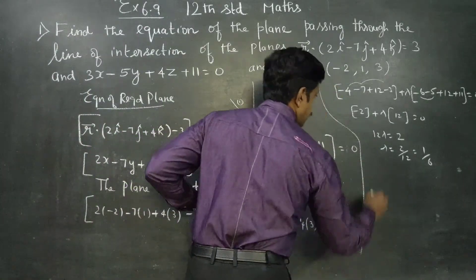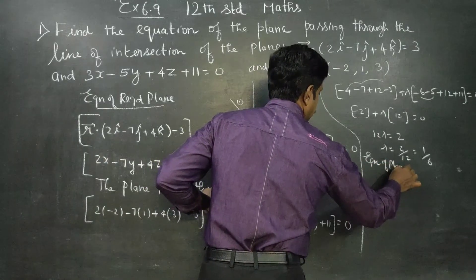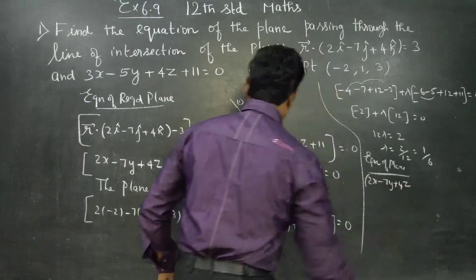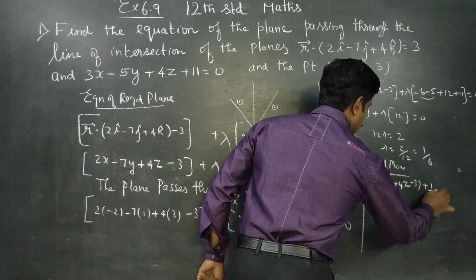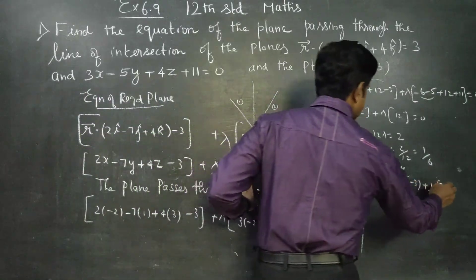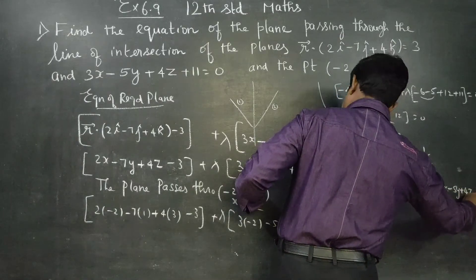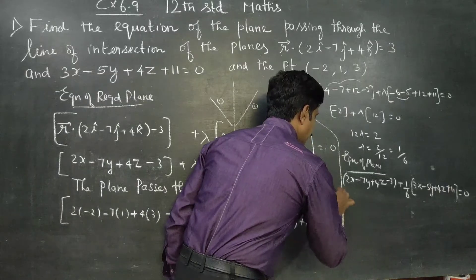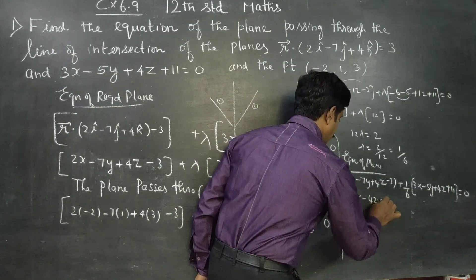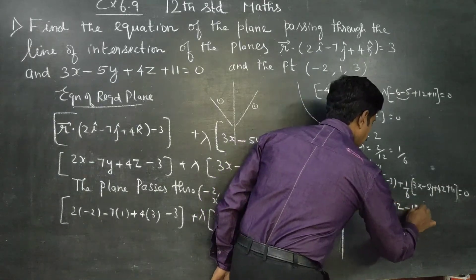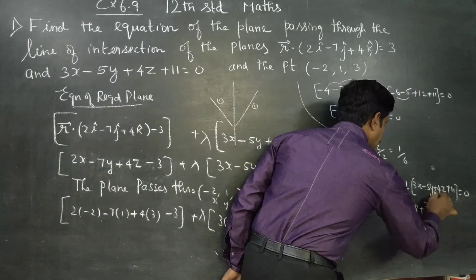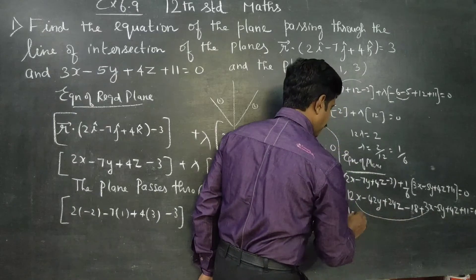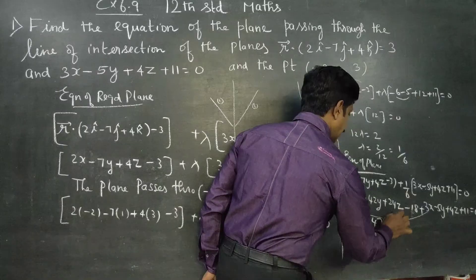Therefore, equation of plane is: 2x minus 7y plus 4z minus 3 plus (1/6) into (3x minus 5y plus 4z plus 11) equal to 0. Multiplying by 6: 12x minus 42y plus 24z minus 18 plus 3x minus 5y plus 4z plus 11 is equal to 0. That gives 15x minus 47y plus 28z minus 7 is equal to 0.